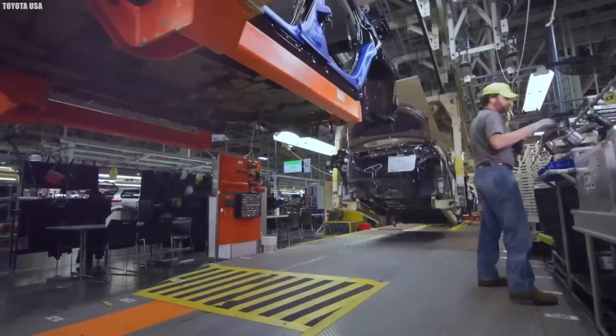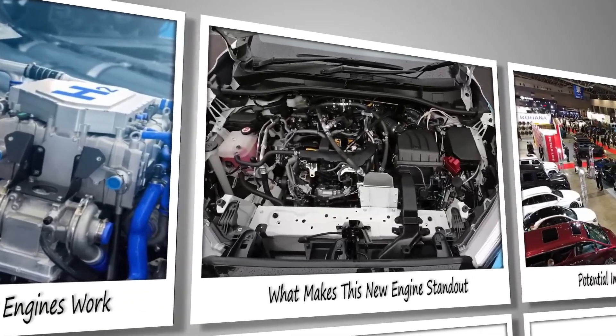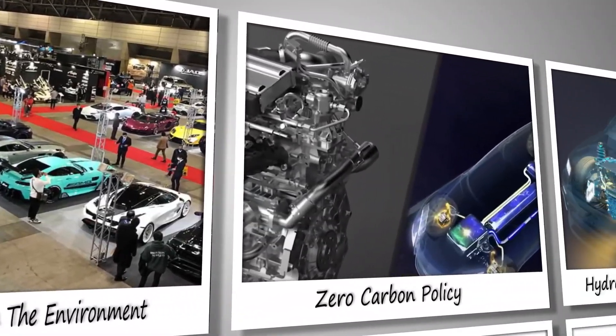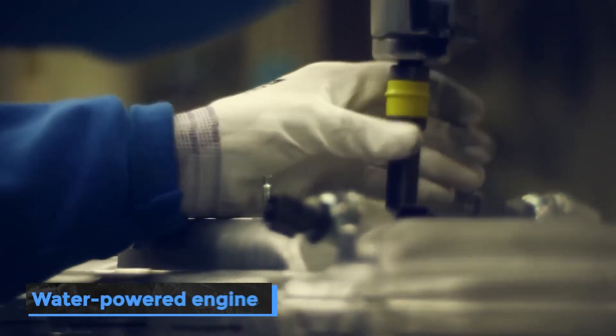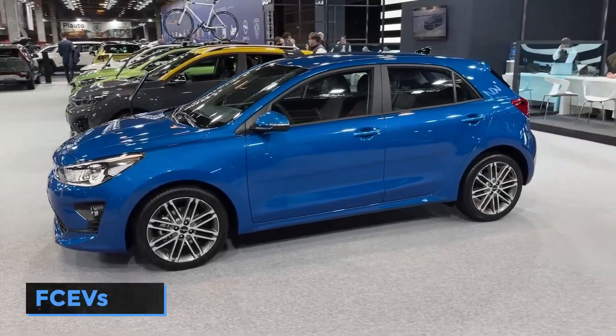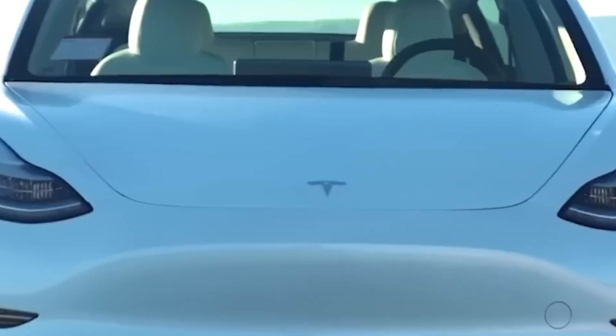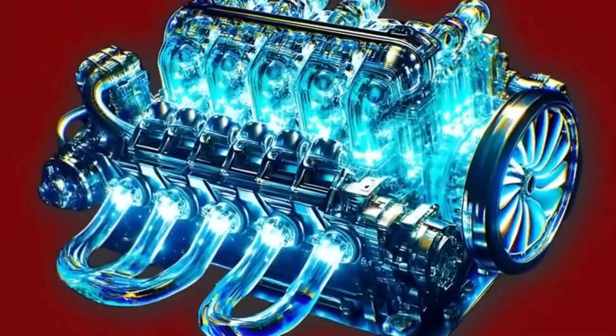Toyota's new engine uses a fuel cell to convert hydrogen into electricity. For instance, the Toyota Corolla Cross H2 concept car features a 1.6-liter turbocharged engine that runs solely on hydrogen, offering a range of about 300 miles with just 5 kilograms of hydrogen.